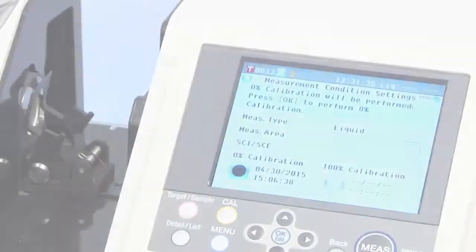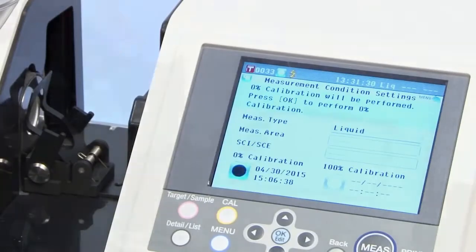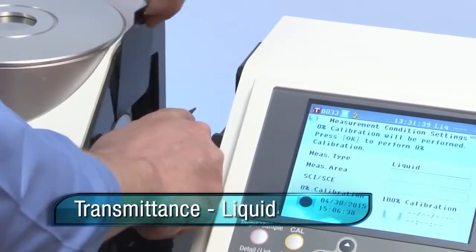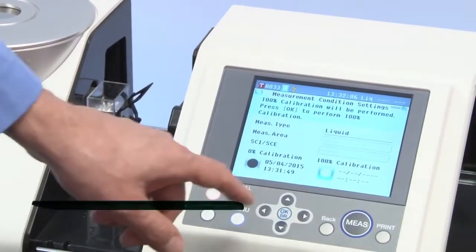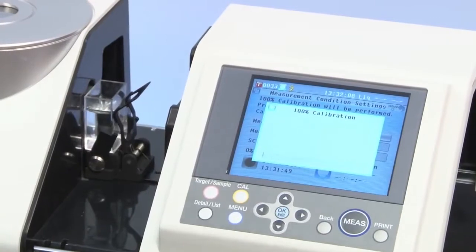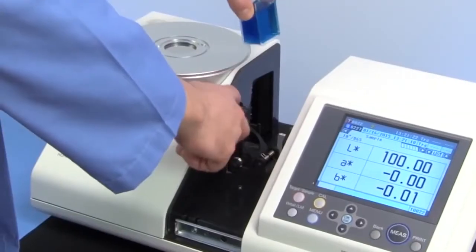The liquid mode will guide you through proper sample preparation which includes zero calibration inside the transmittance chamber as well as a simultaneous white calibration, clear water, and cell holder calibration procedure before measurement.